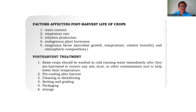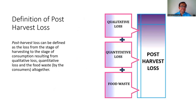Some post-harvest treatments: crops should be washed in cold running water immediately after harvest to remove soil, dust, or other contaminants and to help lower their temperature — reducing field heat. Pre-cooling is done after harvest cleaning or disinfecting, sorting, grading, packaging, and storage. Post-harvest loss can be defined as the loss from the stage of harvesting to the stage of consumption, resulting from qualitative loss, quantitative loss, and food waste.